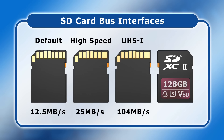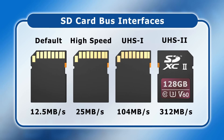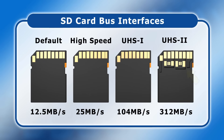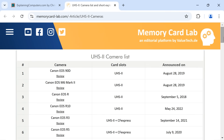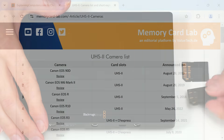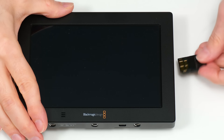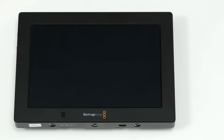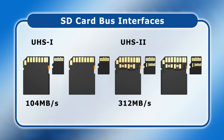In 2014, the SD Association introduced a new bus interface called UHS-2. This can transfer data at up to 312 megabytes per second, and achieves this using a second row of pins. UHS-2 cards are typically used for higher-end video and photo recording, with MemoryCardLab.com currently listing 87 cameras that have a UHS-2 SD card slot. And all 4K Blackmagic Design monitor recorders also have UHS-2 slots. It's also important to note that SanDisk and some other manufacturers have managed to increase the speed of UHS-1 cards using proprietary technologies.